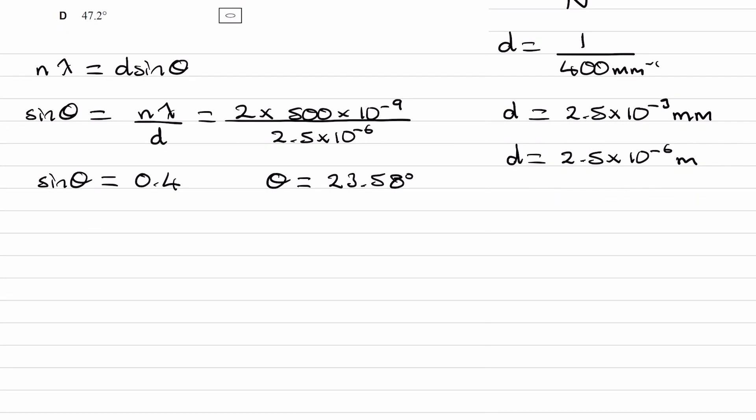What does this angle represent? Here is our diffraction grating and here is our screen. This is the central maximum, n equals 0, and here is n equals 2. We've just worked out what this angle is.